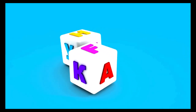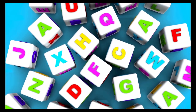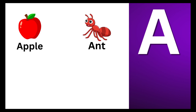Hi kids! Today we will learn about the letters of the alphabet. Number one — A! A is for Apple. A is for Ant. A is for Airplane.